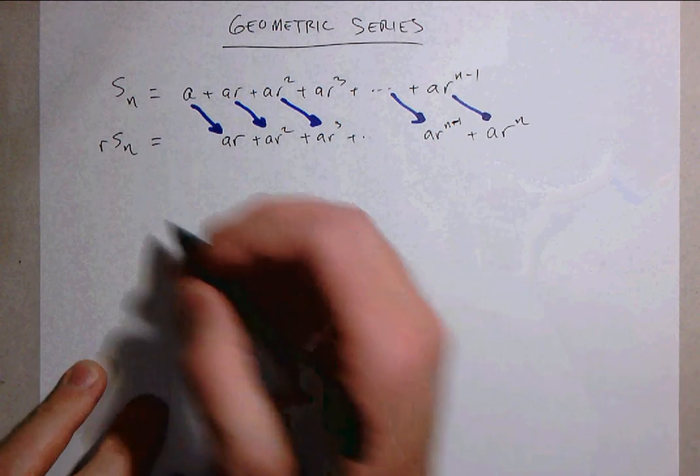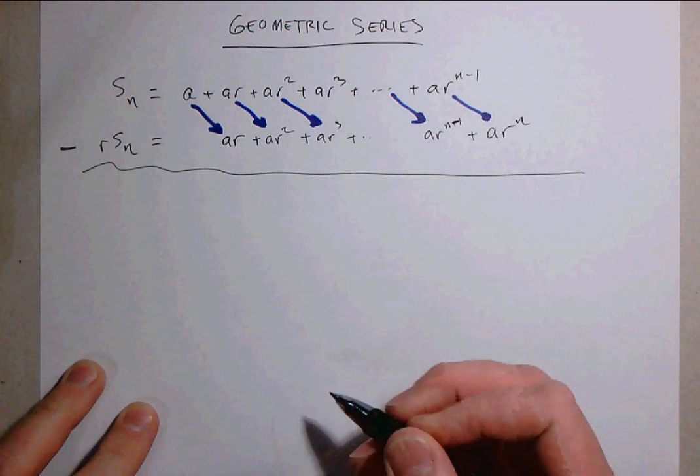So this is the shifting part, the multiplication by r. As you might expect, here comes the subtracting part.